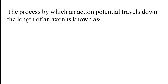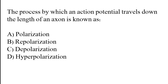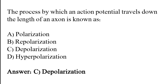The process by which an action potential travels down the length of an axon is known as what? The correct answer is option C. The process by which an action potential travels down the length of an axon is known as depolarization.